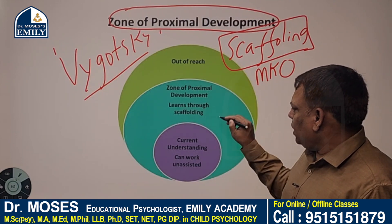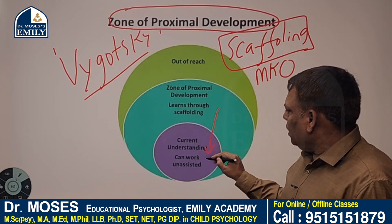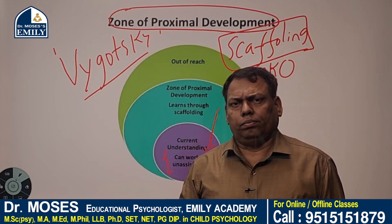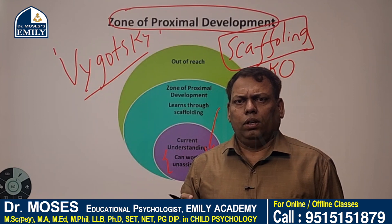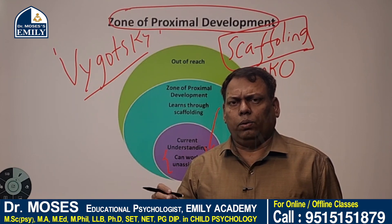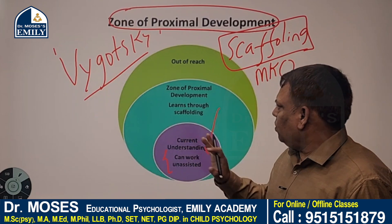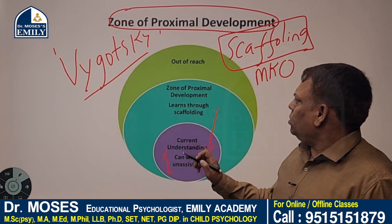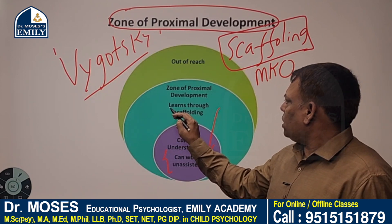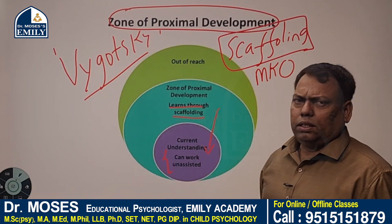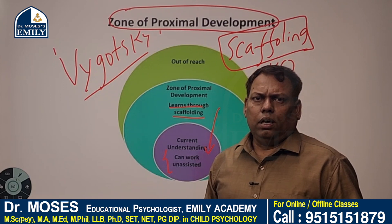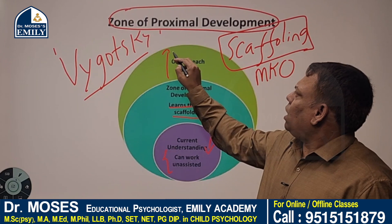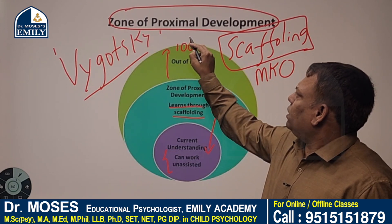This is current understanding — what a child can work on unassisted. For example, you are learning child development pedagogy without any tuition or coaching — that is your knowledge, say 30 percent out of 100. Zone of Proximal Development is what the child learns through scaffolding — the helping process, assistance of mentors.